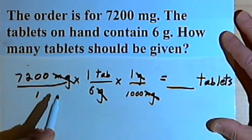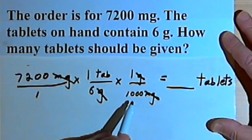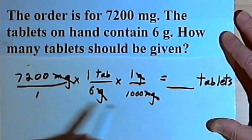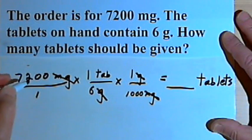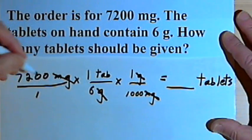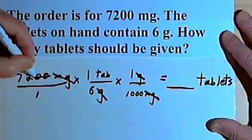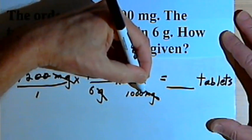And now let's see if I can simplify any of this. Well, I've got 1,000 in the denominator and 7,200 in the numerator, so I'm going to divide both of those numbers by 100. That just means crossing two zeros off of the end of each number.